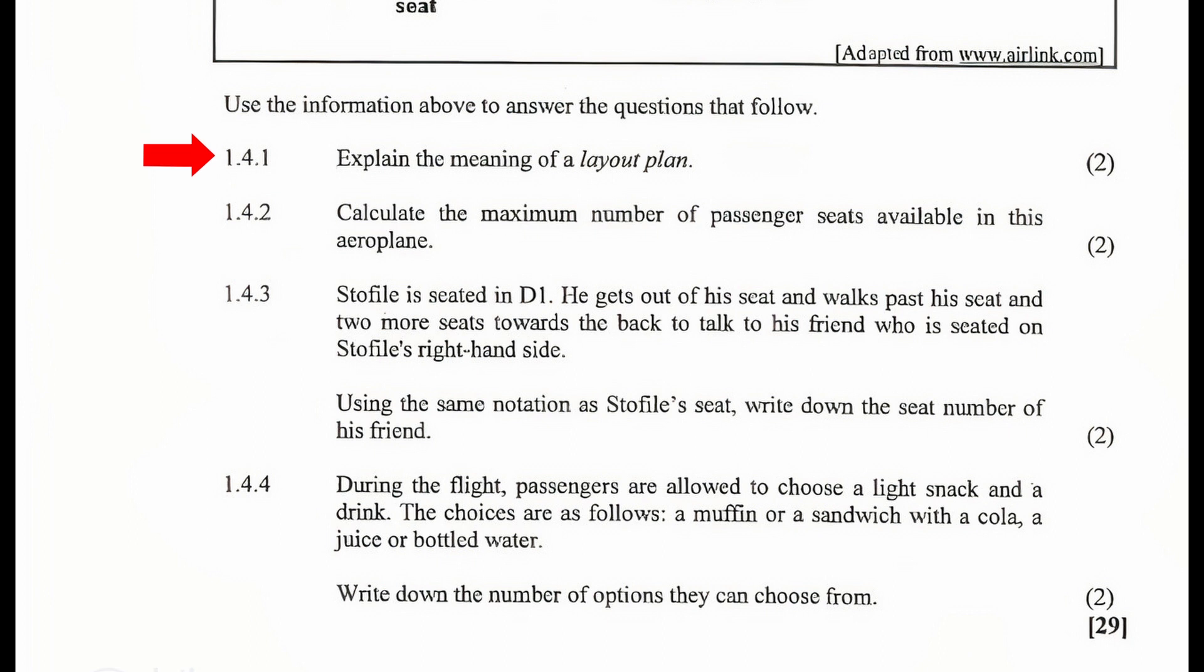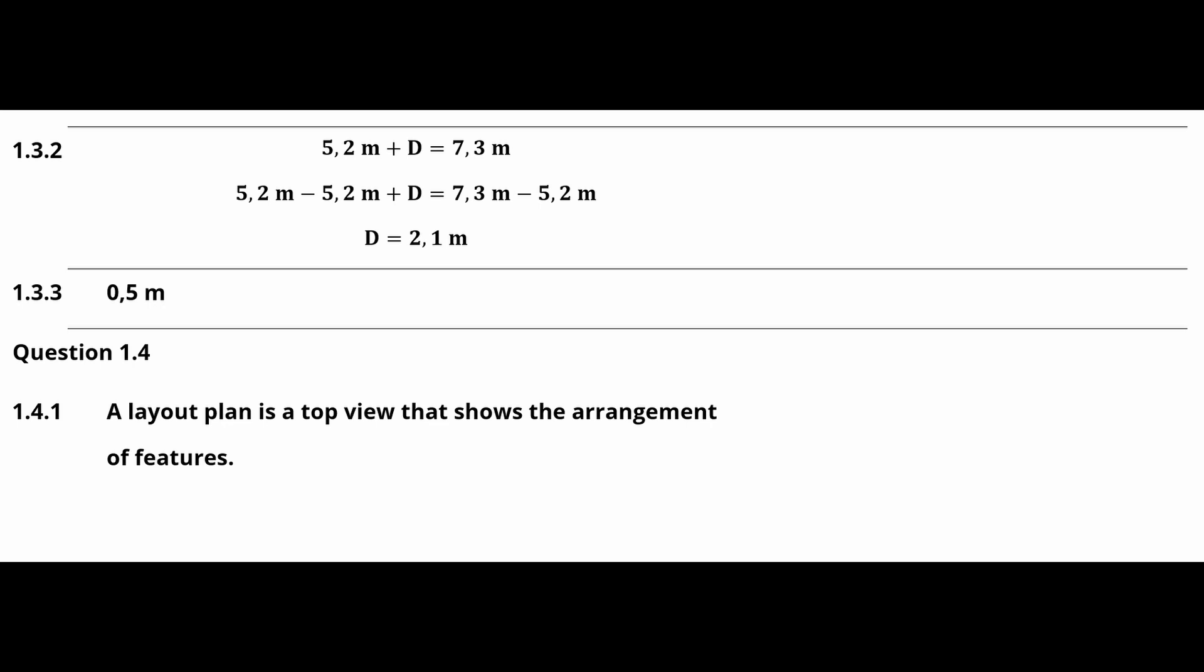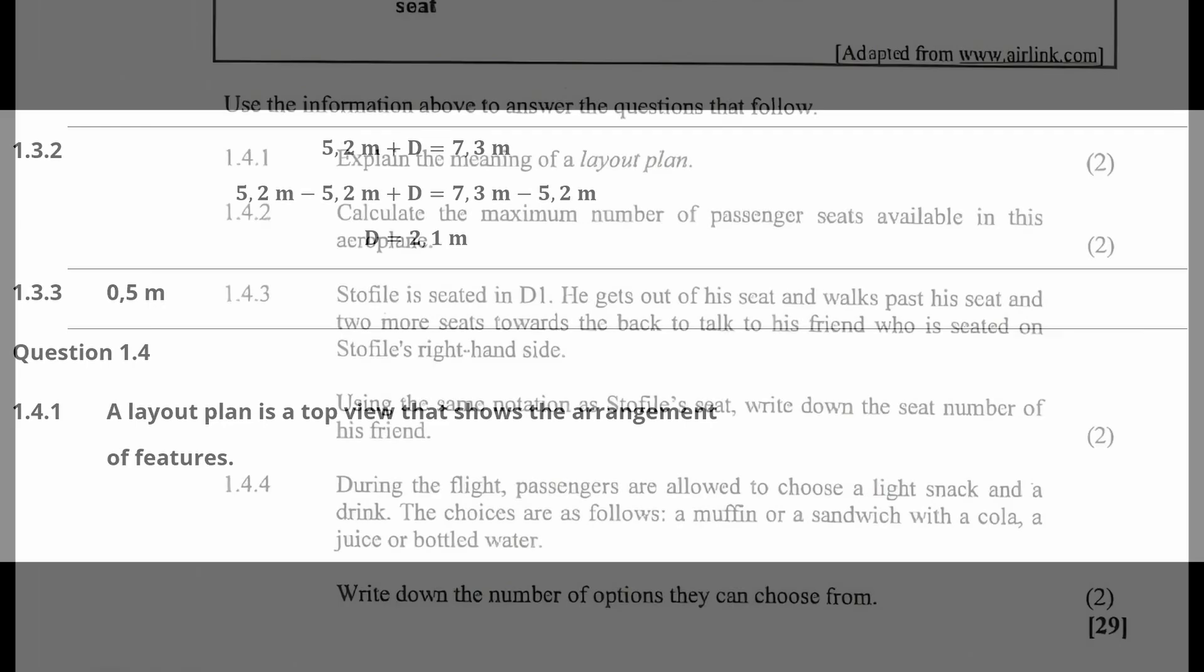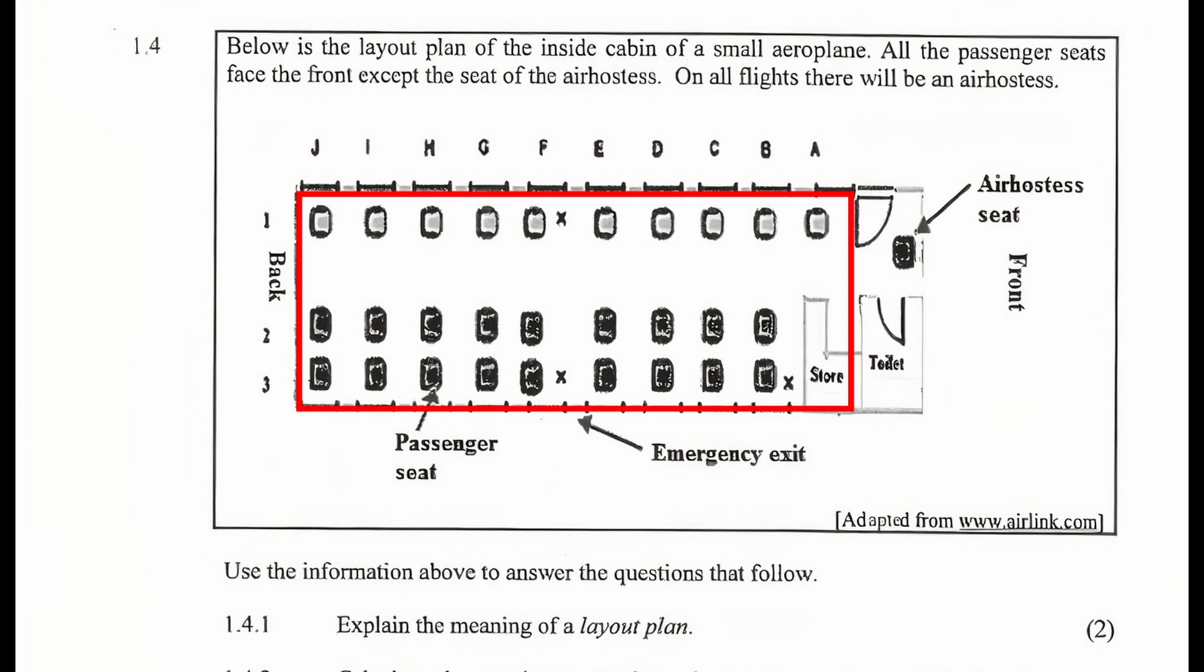Question 1.4.1: Explain the meaning of a layout plan. A layout plan can be described as a top view that shows the arrangement of features. 1.4.2: Calculate the maximum number of passenger seats available in this aeroplane. By simply counting the number of seats available in this layout plan excluding the air hostess seat we will find that the maximum number of passenger seats available in this aeroplane is 28.